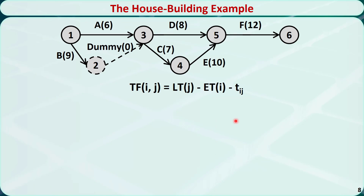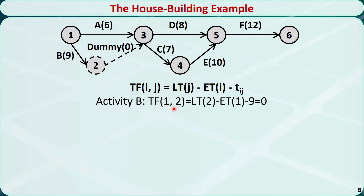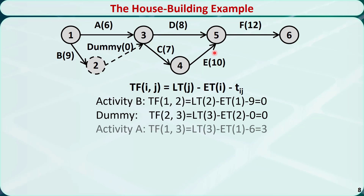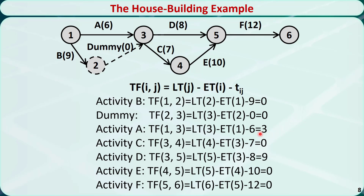Let's use the house building example to do the calculation. Activity B is denoted by arc (1,2). The total float of activity B equals the late time of node 2 minus the early time of node 1 minus the duration of activity B, which is equal to 0. Similarly, we can calculate the total float of all other activities. We find that activity A has a total float of 3, activity D has a total float of 9, and all other activities have a total float of 0.